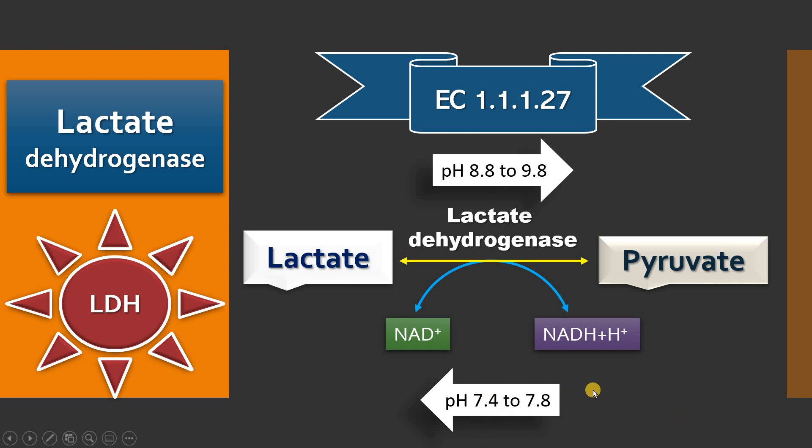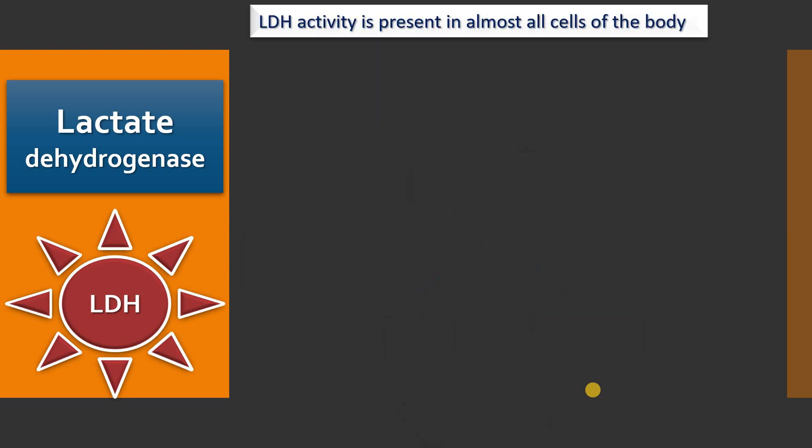So, given physiological pH, this lactate dehydrogenase favours the conversion of pyruvate to lactate in the absence of oxygen, or in anaerobic glycolysis.